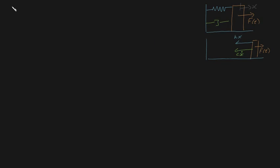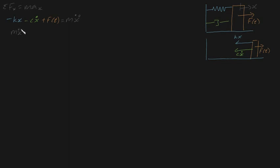We can turn this free body diagram into a mathematical expression by using Newton's laws. We know that the sum of forces in the x direction is equal to your mass times your acceleration in the x direction. We know that kx is going to be negative because it's acting towards the left, so we write this as minus kx minus cx-dot, and plus f of t, and that's going to be equal to your mass times your acceleration, or your double derivative of your displacement.